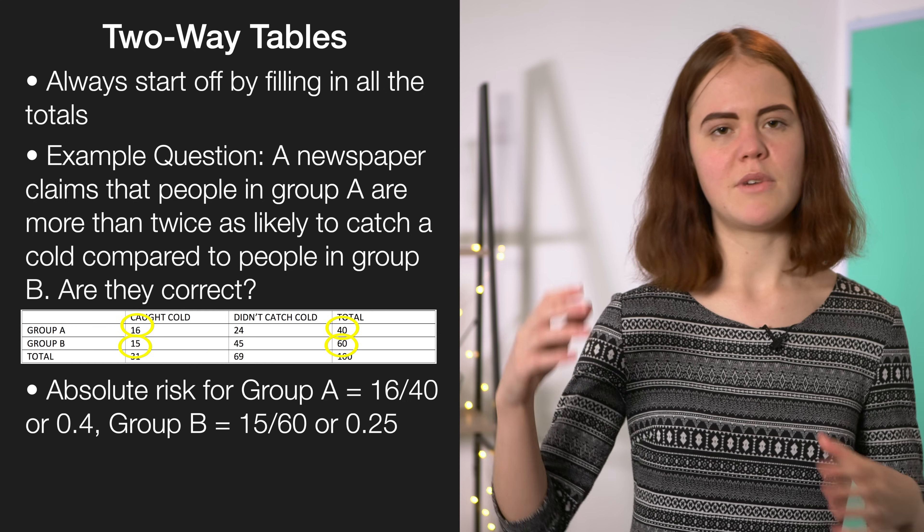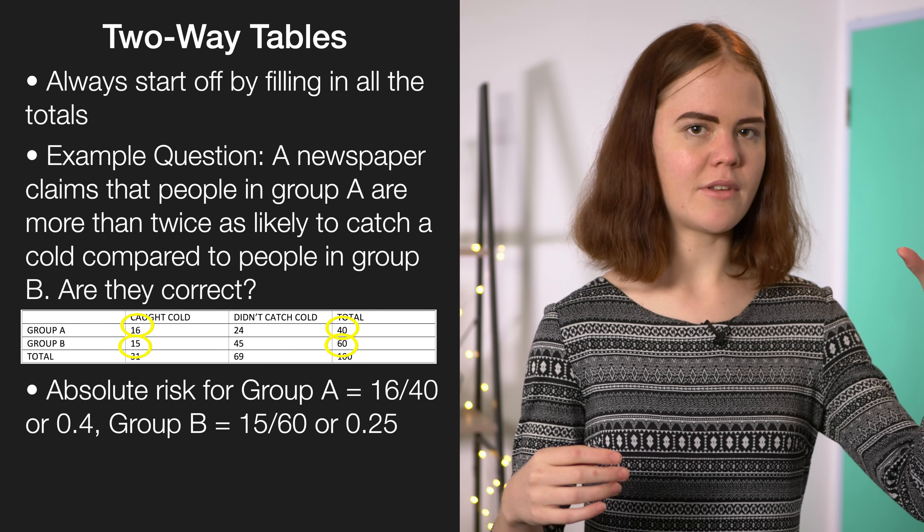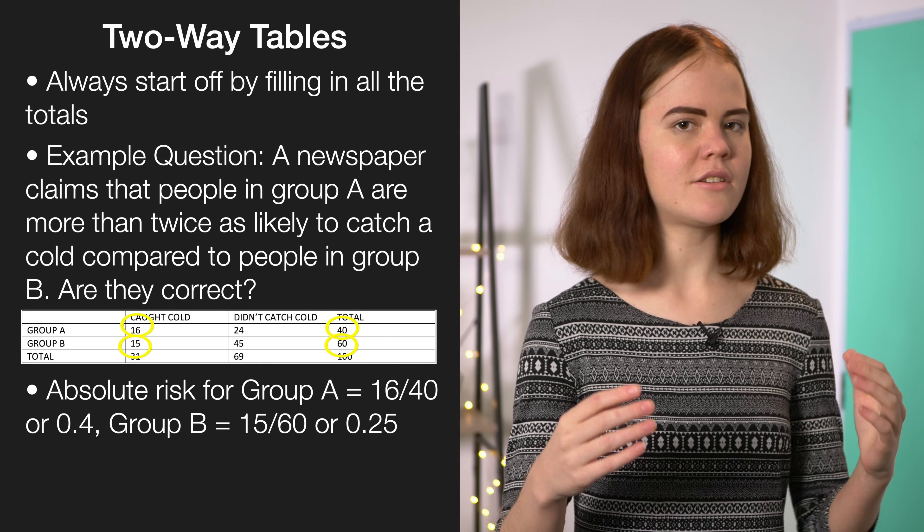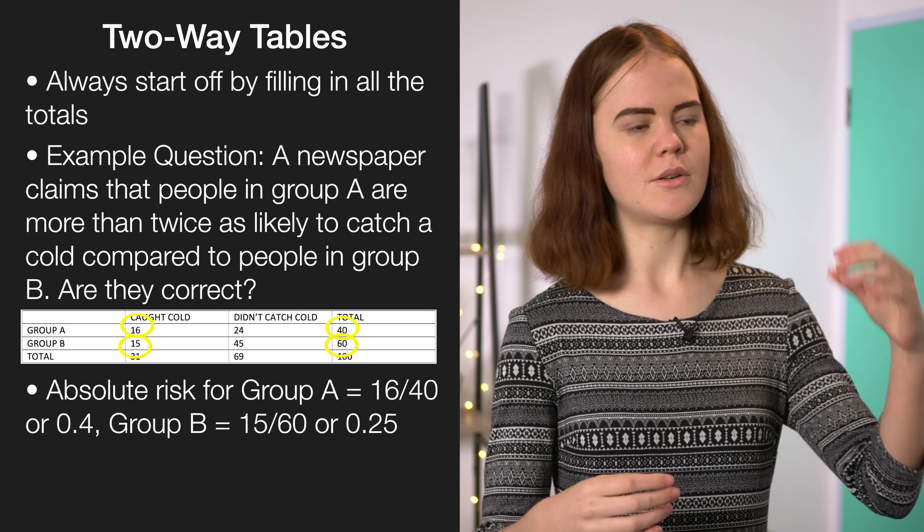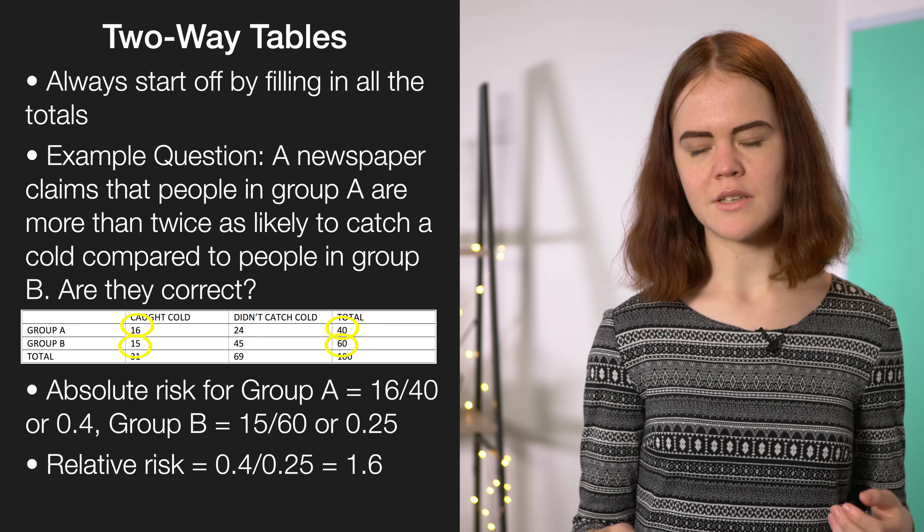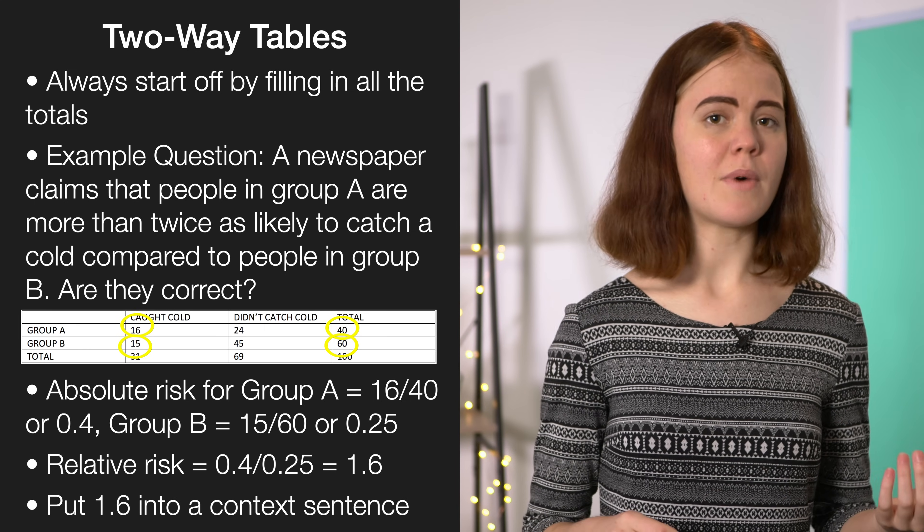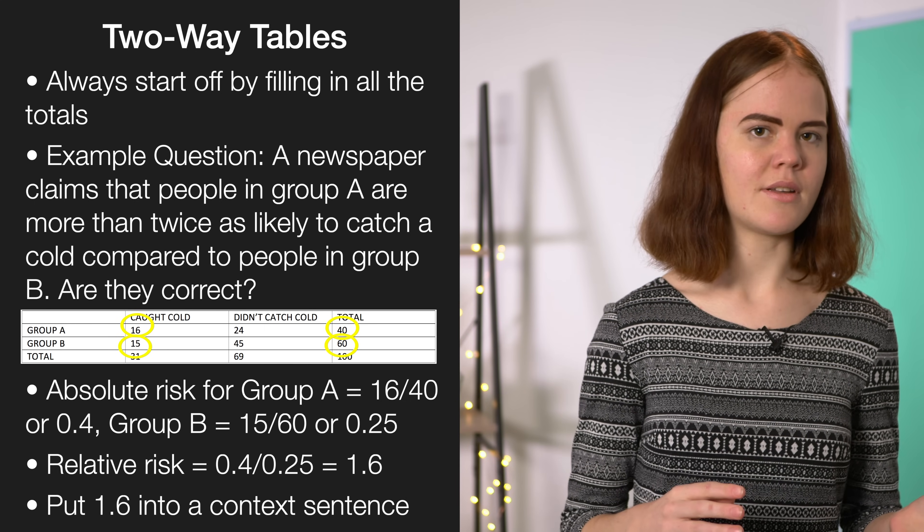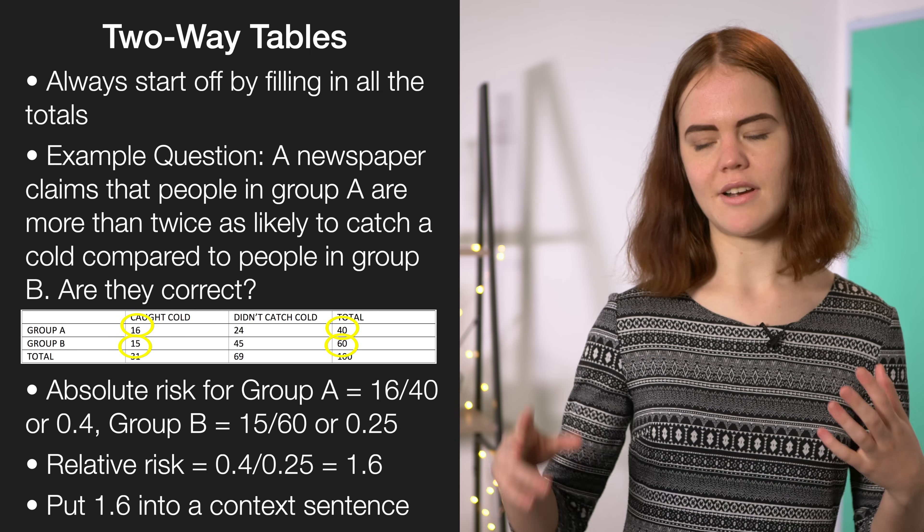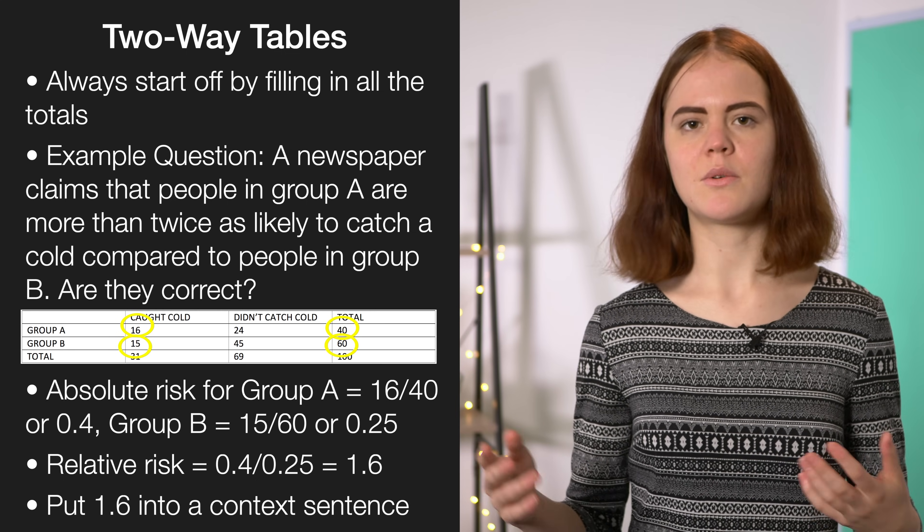To make a relative risk, we just put them in a fraction. Group A came first, so it's on the top of the fraction, and group B is the group we're comparing to, so it goes on the bottom of the fraction. So we get 0.4 divided by 0.25, which comes out to 1.6. To finish off these questions, you write a context sentence. So you'd say, group A is 1.6 times as likely to catch a cold compared to group B. Then finally relate it back to the actual question and say the newspaper was wrong because that's not twice as likely.